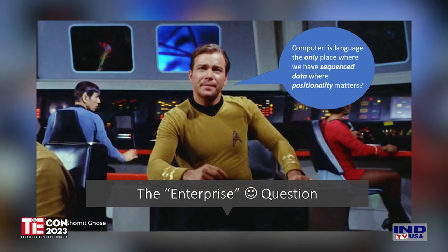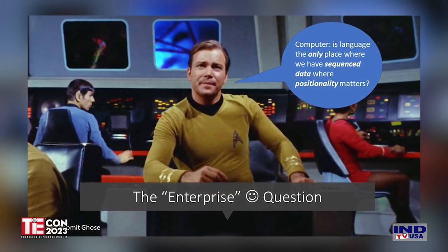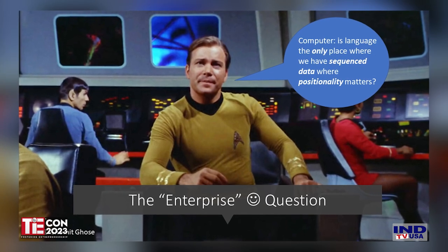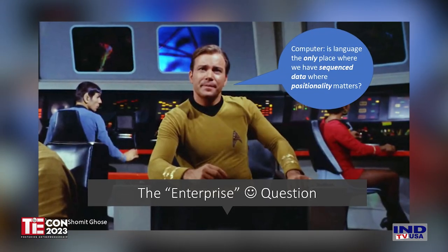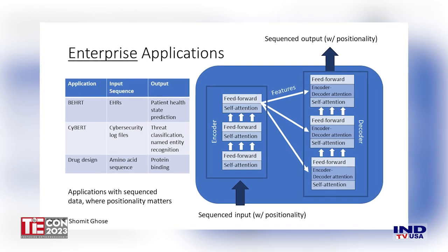Here's my little inside joke — the enterprise question. Captain Kirk on the Starship Enterprise actually used natural language processing to interface with the computer, pre-saging Alexa, etc. He would say 'computer,' and then the computer would answer the question. So: is language the only place where we see sequence data where positionality has meaning? If you're involved in the technology business, ask yourself: in your company, are you also processing sequence data where positionality has meaning? If the answer is yes, you're a great candidate for a transformer.